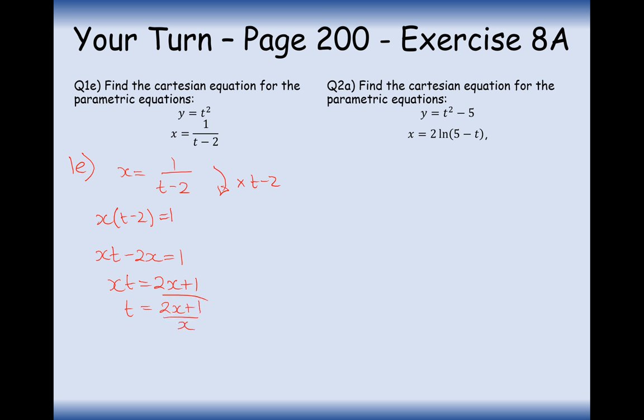Once we've got t equals something to do with x, we can now substitute it into the y equation. So, therefore, y is going to equal 2x plus 1 over x all squared. And there we are. Now, that's the combined equation for question 1e, the Cartesian equation for question 1e.